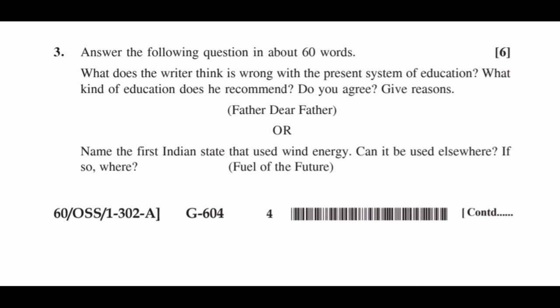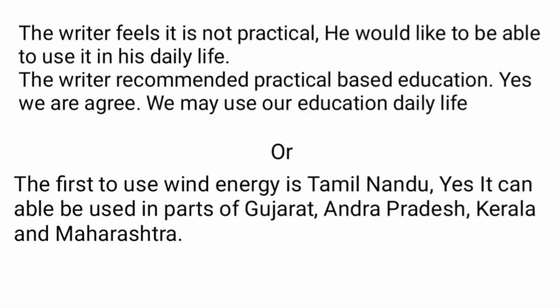Question 3: Answer the following in about 60 words. What does the writer think is wrong with the present system of education? What kind of education does he recommend? Do you agree? Give reasons. Answer: The writer feels the present system is not practical — he would like education to be usable in daily life. The writer recommends practical-based education. Yes, we agree — we should be able to use our education in daily life. OR Question 4: Name the first Indian state that used wind energy. Can it be used elsewhere? Answer: The first state to use wind energy is Tamil Nadu. Yes, it can also be used in parts of Gujarat, Andhra Pradesh, Kerala, and Maharashtra.